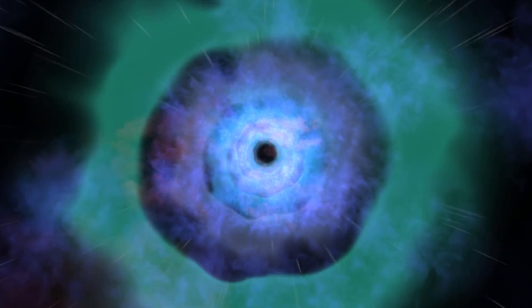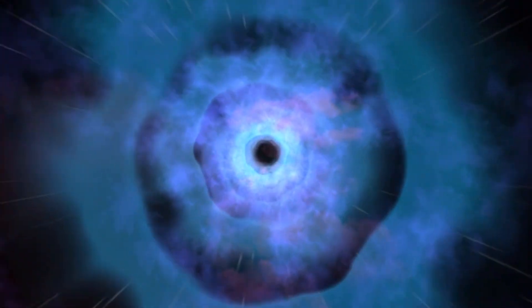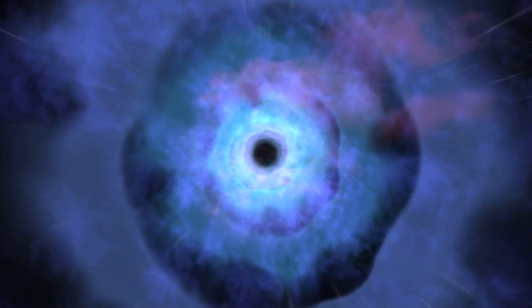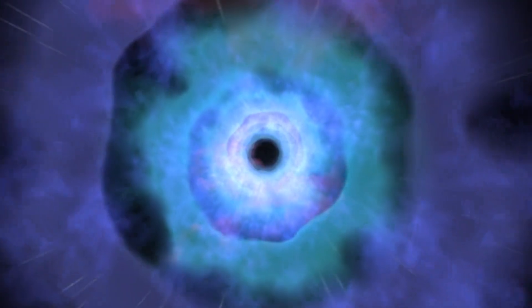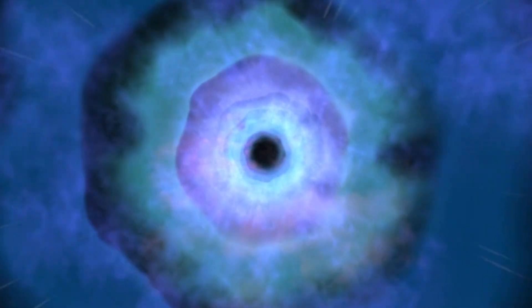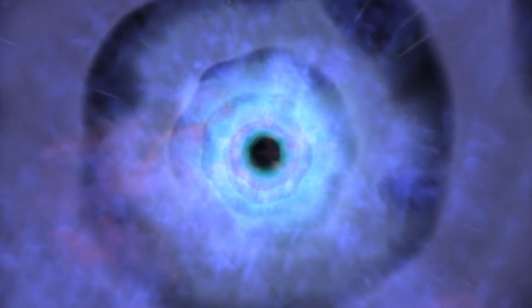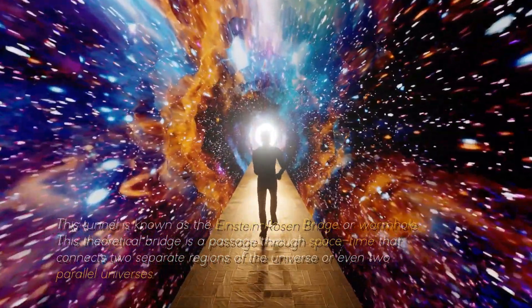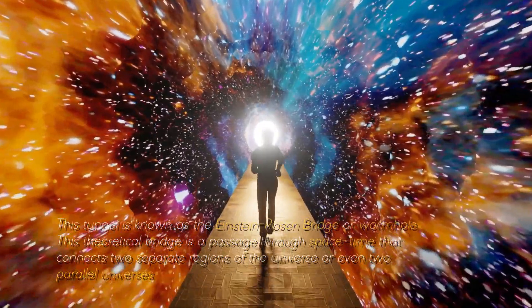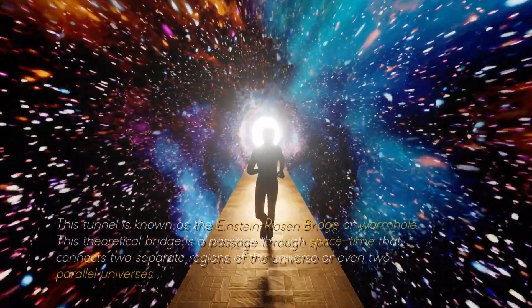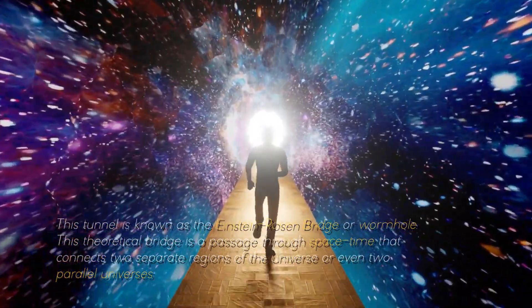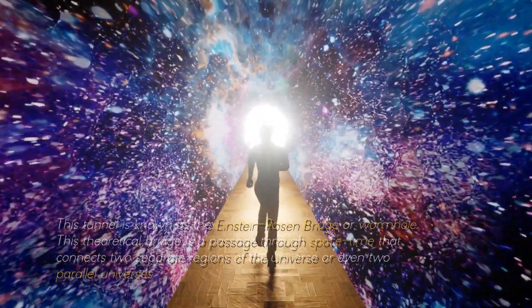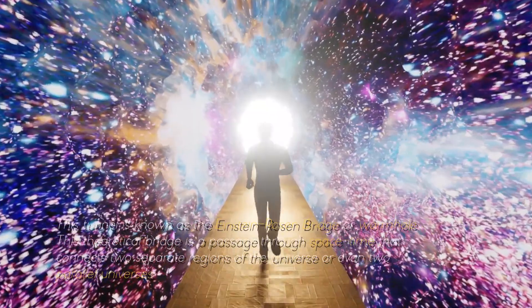The idea is that, instead of being crushed by falling into a black hole, one would be sucked through a tunnel through the ring of fire and emerged through a white hole somewhere else in a parallel universe. This tunnel is known as the Einstein-Rosen Bridge, or wormhole. This theoretical bridge is a passage through space-time that connects two separate regions of the universe or even two parallel universes.